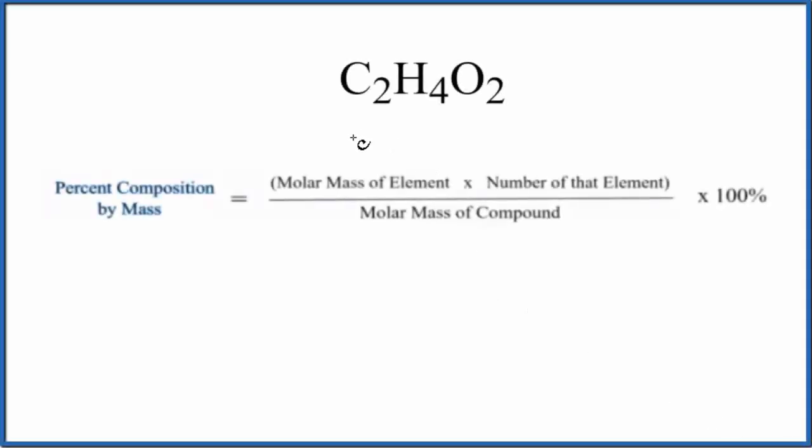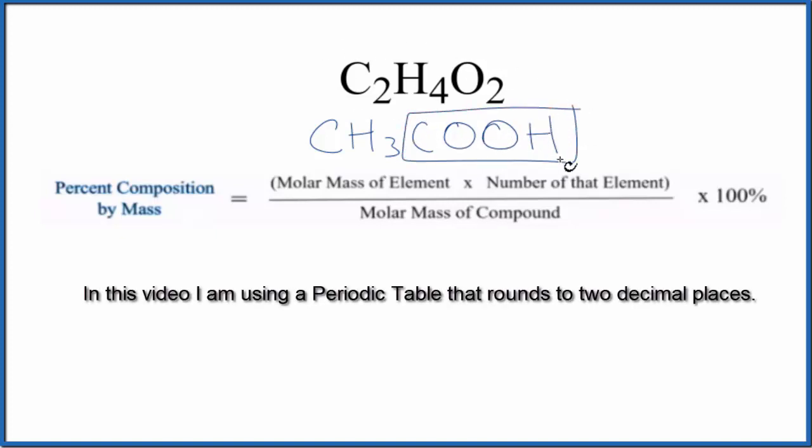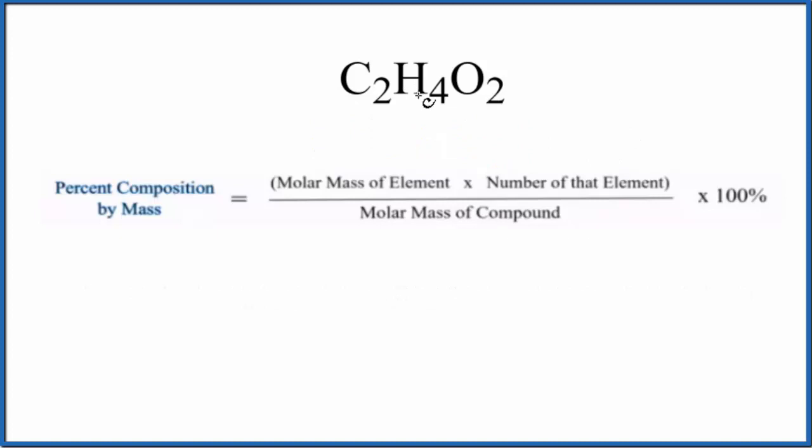In this video we'll find the percent composition by mass for each element in C2H4O2. We're talking about acetic acid here. Often you'll see this written like this: CH3COOH, and that works as well. These are the same thing. This COOH is a carboxylic acid, and we have this acetic acid here. So to find the percent composition...